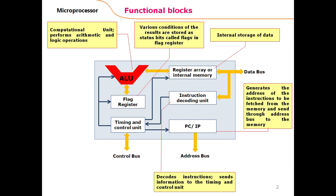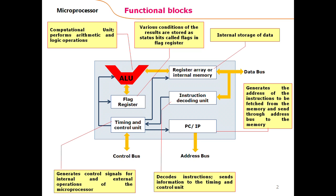When the microprocessor executes an instruction, after fetching it, the instruction is decoded by the decode unit. This unit interprets the operation of the instruction and generates information that is sent to the timing and control unit. The timing and control unit generates control signals for internal and external operations of the microprocessor. The operation code of the instruction determines a number of control signals, and those control signals are responsible for controlling other functional blocks of the microprocessor.